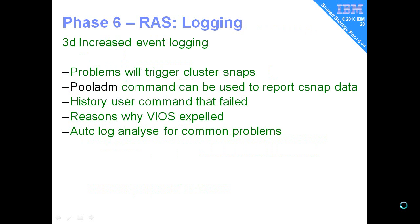The final RAS feature is increased event logging and the ability to parse those logs. If a problem is detected by the shared storage pool itself, it will automatically trigger a cluster snap. The pool admin command can be used to generate reports from that CSNAP data. It keeps a history of user commands, particularly those that have failed. When a VIO server is expelled from the cluster, it reports on the reasons why. There's also auto-log analysis for common problems — it detects symptoms of a known problem and reports back what it thinks the problem is.